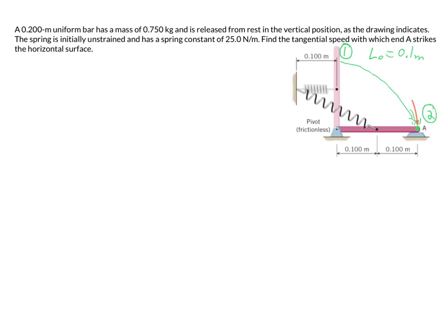Using conservation of energy: KE₁ + PE₁ + work by non-conservative forces = KE₂ + PE₂. The rod starts at rest, released from rest, so there's no initial kinetic energy — neither translational nor rotational. We do have initial gravitational potential energy, MGH₁.